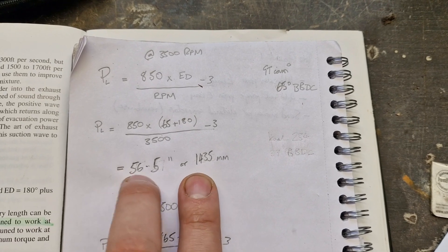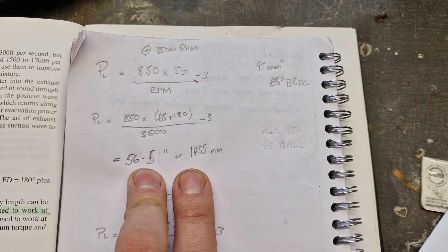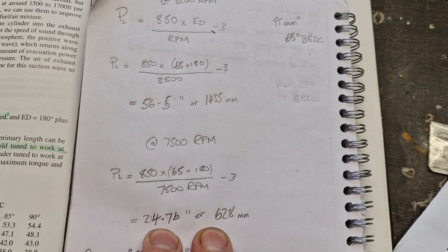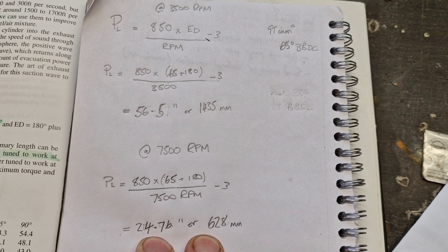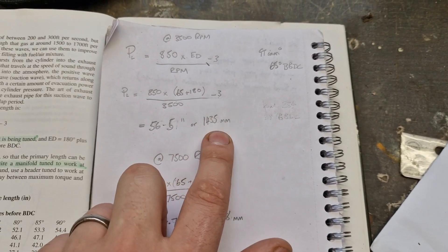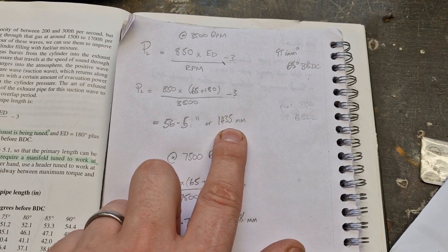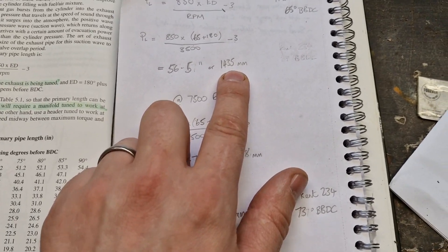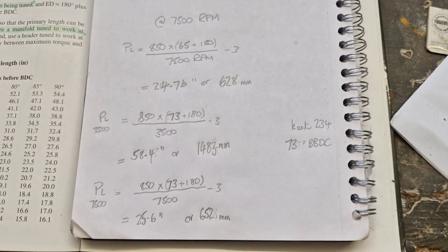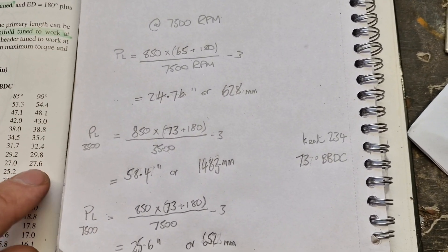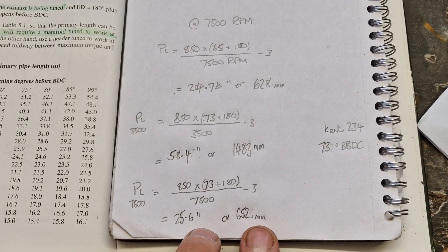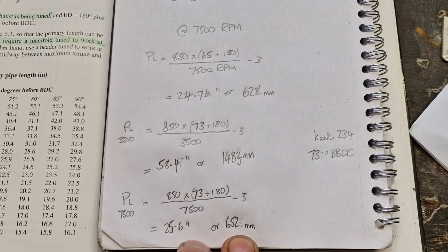When you go from 3,500 here you've got 56 inches, but when you go up to 7,500 obviously it drops by almost just over half to 24 inches, which is a lot more manageable. Getting a primary length like that in the exhaust is going to pretty much end at the back of the car by the time you've done it. It's the same story with the 234.